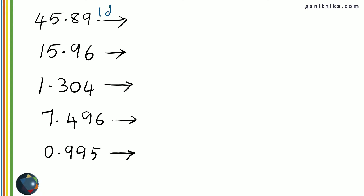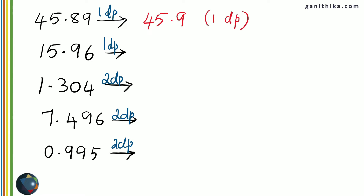Round these off to the decimal places given. Pause the video, give the answers, and check again. 45.89 to one decimal place: you look at the second decimal place which is 9, more than 5. Therefore the 8 in the first decimal place will be increased by 1. So to one decimal place, 45.89 is approximately equal to 45.9.